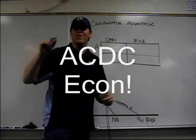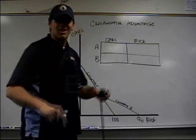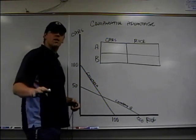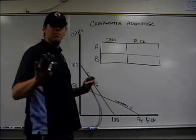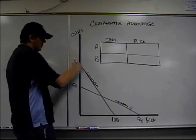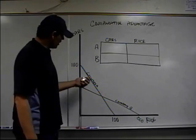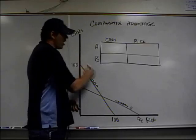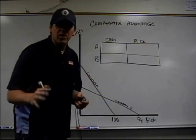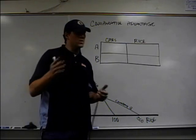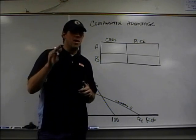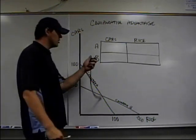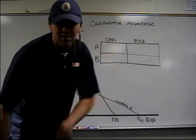Hey, how you doing? This is Mr. Clifford with ACDC Econ, Key Econ Concepts in 60 Seconds. Today we're going to talk about comparative advantage. Now before we start the clock, we've got the production possibilities curve for two countries, Country A and Country B. It's showing the production of cars and rice. You start off with a question like this, probably on a test or a free response, maybe on a problem set — you've got to know how to do this. I'm going to show you in 60 seconds.